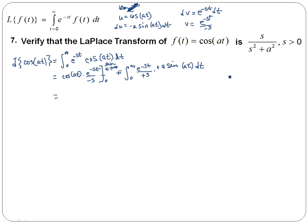I can simplify this first part. Since s is greater than 0, that ensures the exponential part converges, and cosine is always between negative 1 and 1, so it won't cancel out the exponential. The limit as t goes to infinity is 0, and at t equals 0 I get cosine(0) times e to the 0 over negative s. Cosine(0) is 1 and e to the 0 is 1, giving negative 1 over s, but that's being subtracted, so I get positive 1 over s.